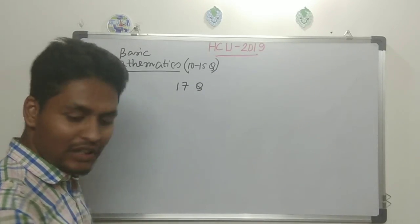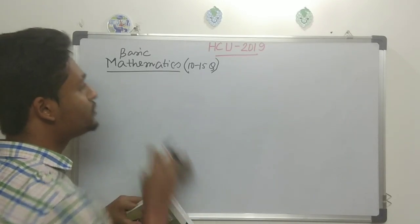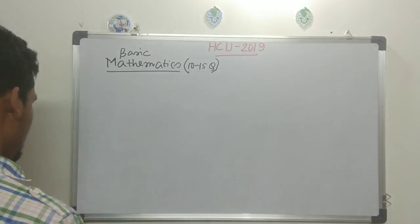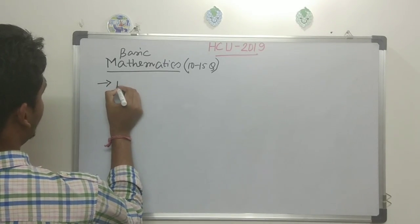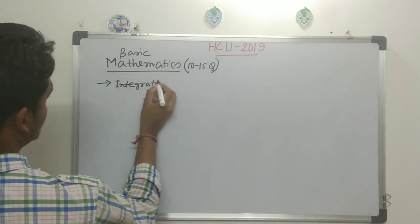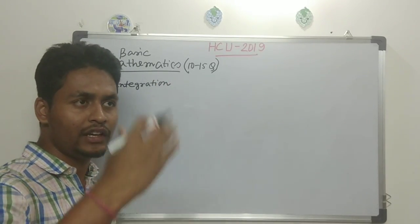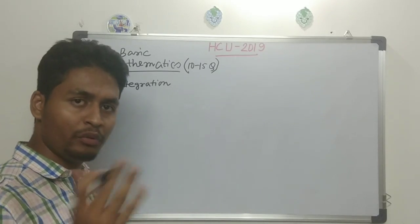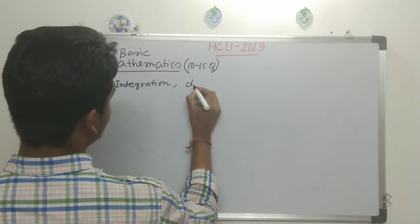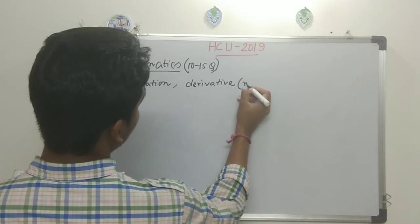So basic mathematics is a must. Within basic mathematics there are 4 to 5 topics which are generally important. The first is integration — definite integrals and limits. Just like that, integration and all derivatives are important.